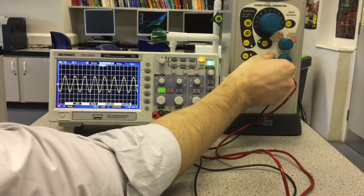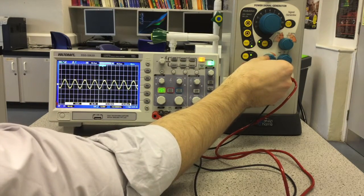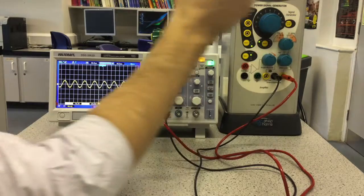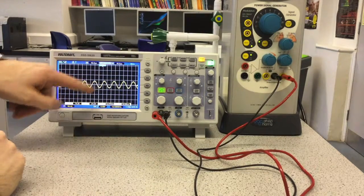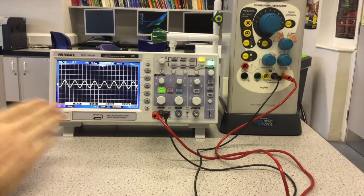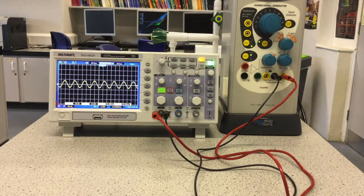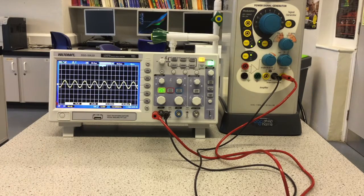And then I can reduce the amplitude. I was already at maximum amplitude, so I can only reduce it here, and you can see the amplitude of the display is getting smaller there. And that's a digital oscilloscope.